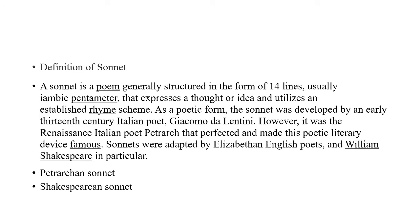Later examples of sonnet sequences on various subjects include Wordsworth's The River Duddon, D.G. Rossetti's House of Life, Elizabeth Barrett Browning's Sonnets from the Portuguese, and the American poet William Ellery Leonard's The Two Lives. Dylan Thomas's Altarwise by Owl-Light (1936) is a sequence of ten sonnets that are intense meditations on the poet's own life. George Meredith's Modern Love (1862), which concerns a bitterly unhappy marriage, is sometimes called a sonnet sequence even though its component poems consist not of 14 but of 16 lines.